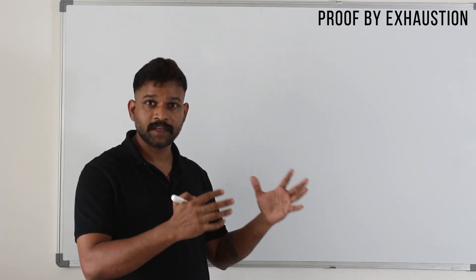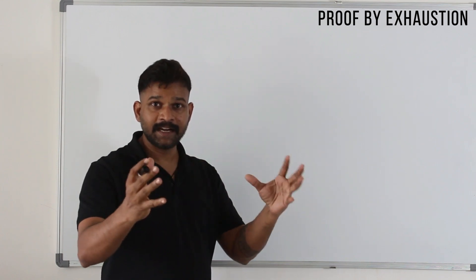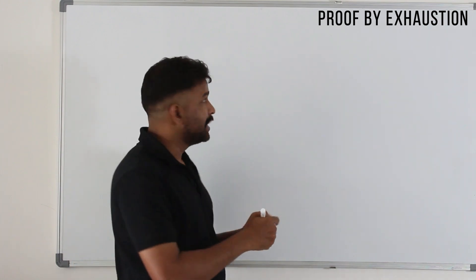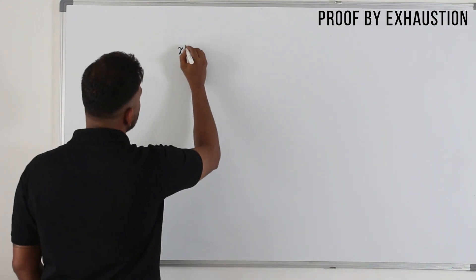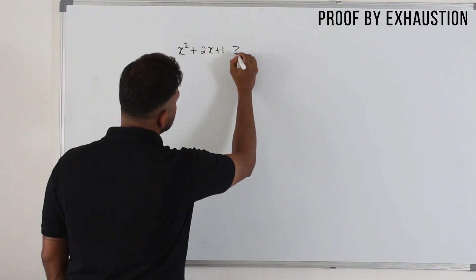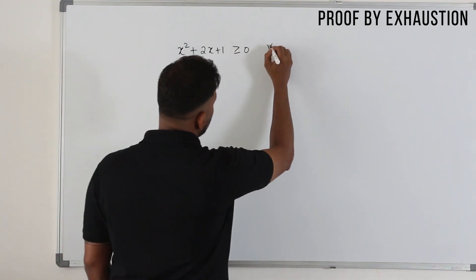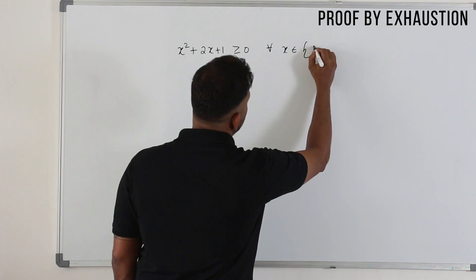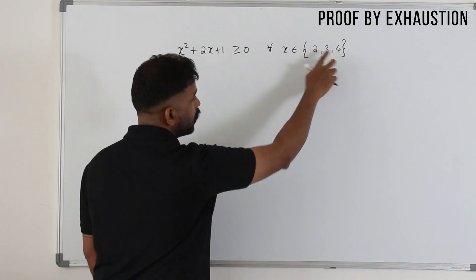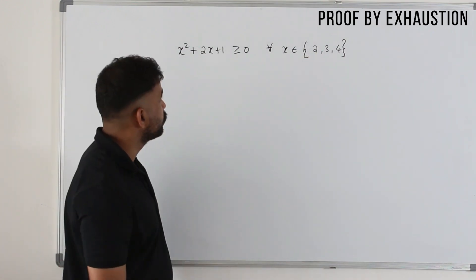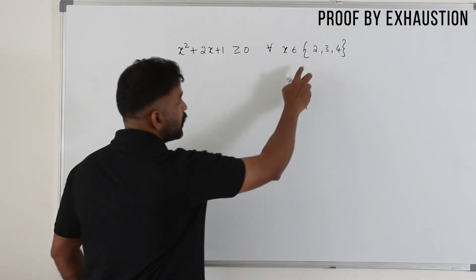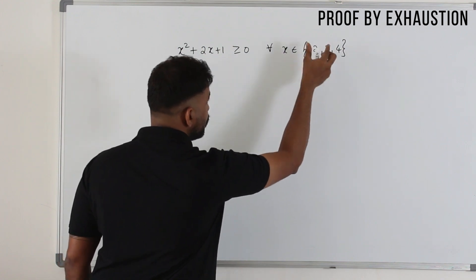Basically you will be asked to prove something on a set of numbers — a limited set of numbers. You need to prove that for each and every number. For example, let's say they want you to prove that x² + 2x + 1 ≥ 0 for all x belonging to {2, 3, 4}. x takes any one of these numbers. So instead of thinking about all the proofs, the easy way is to substitute all the numbers because we have a very limited set.